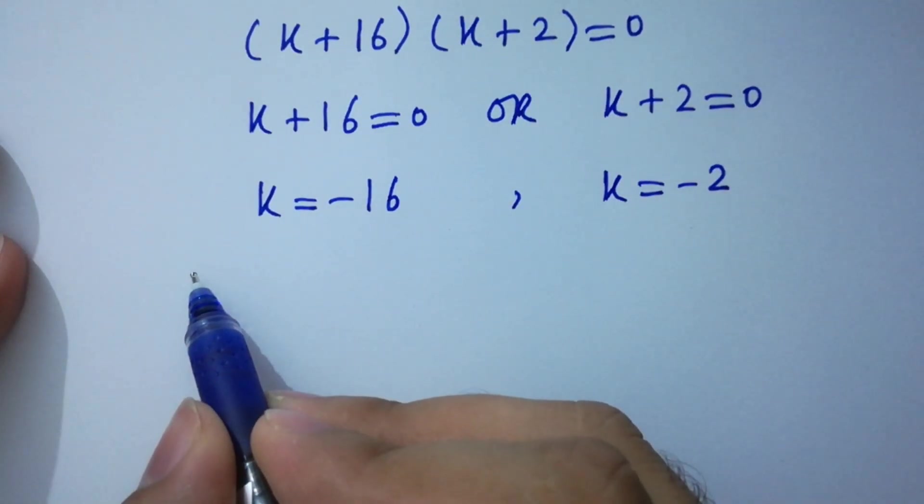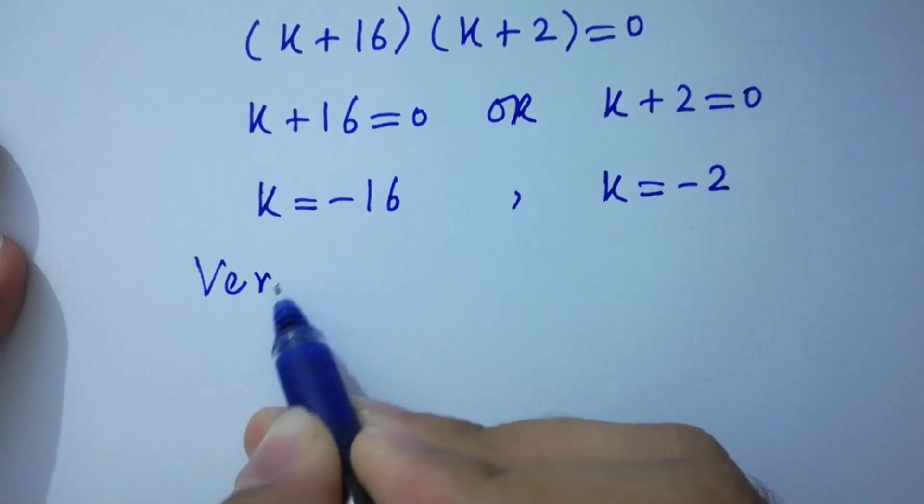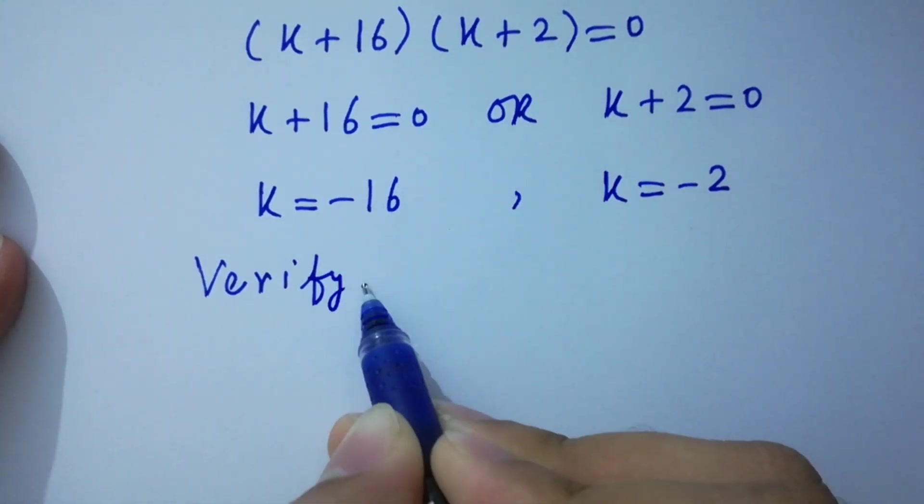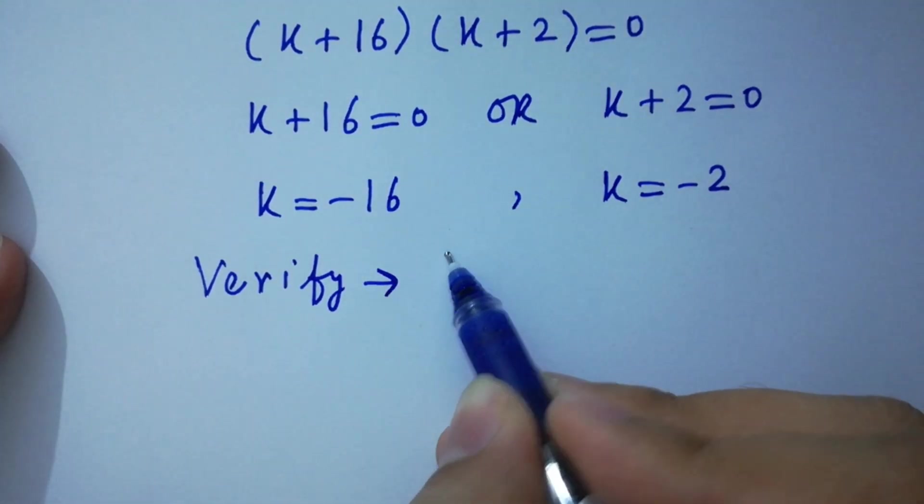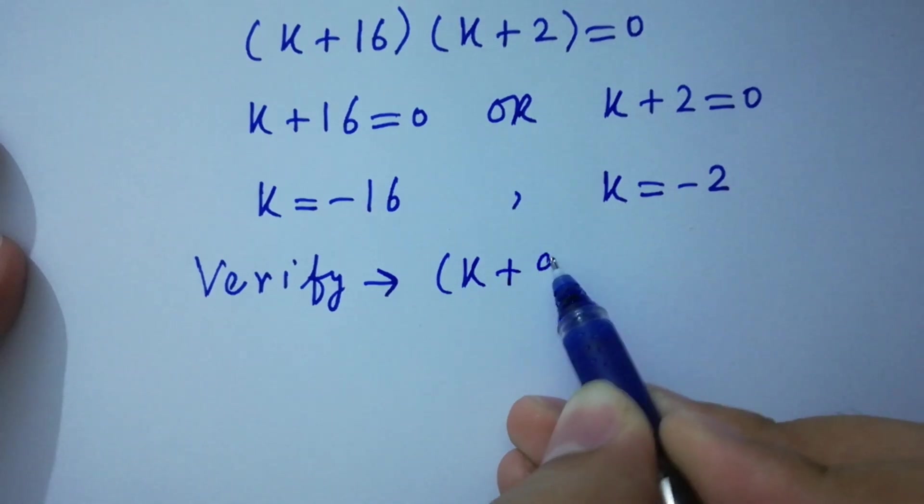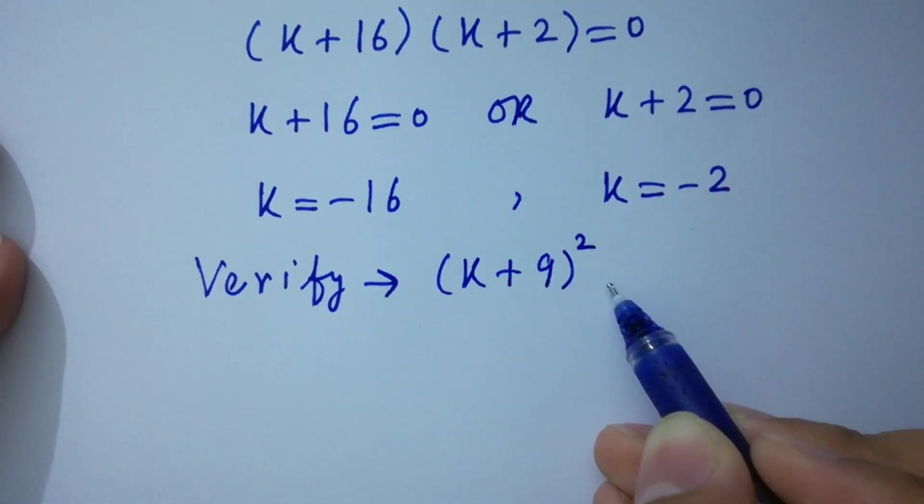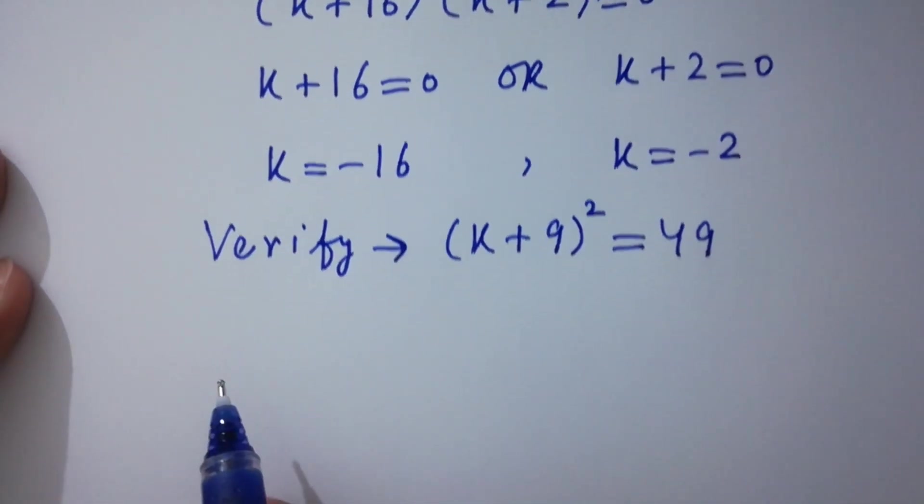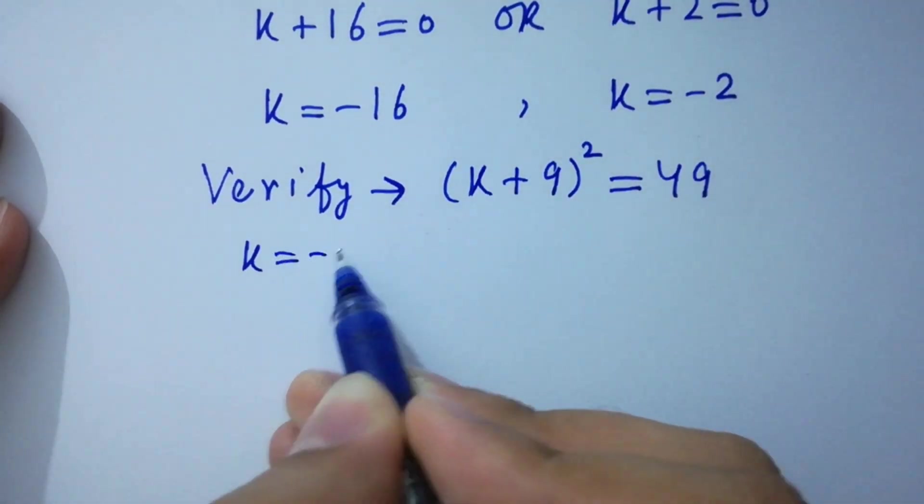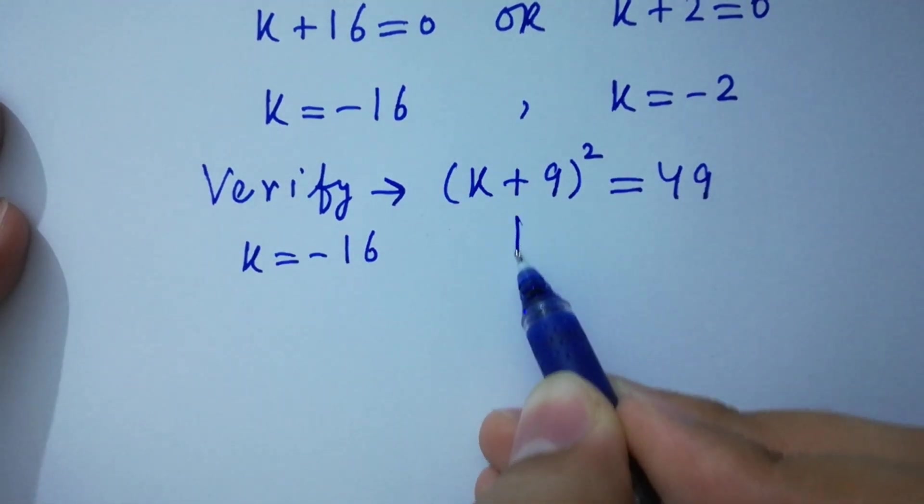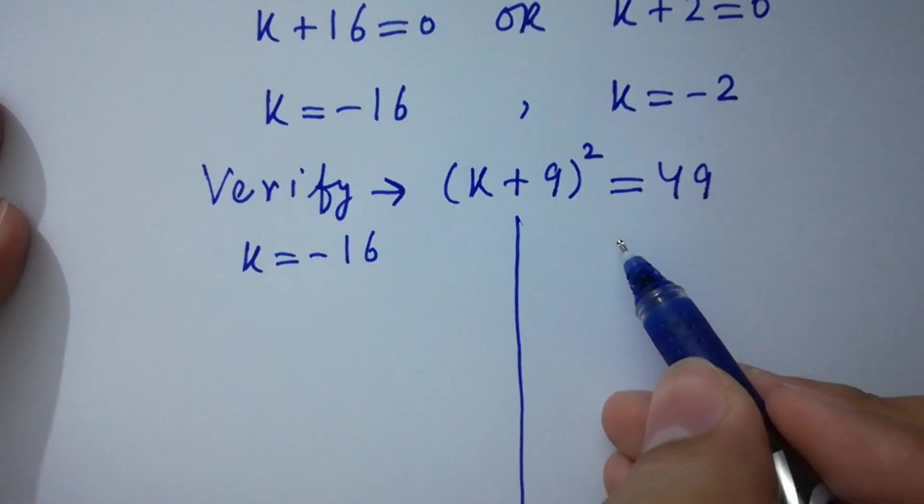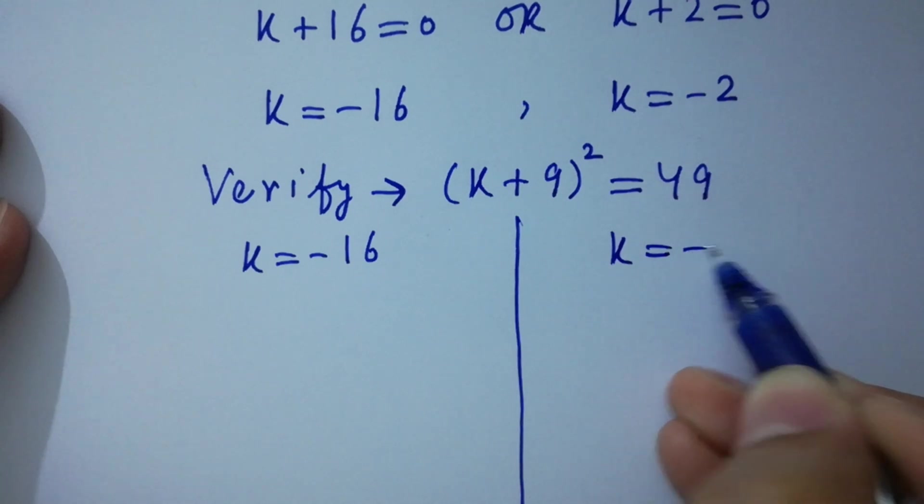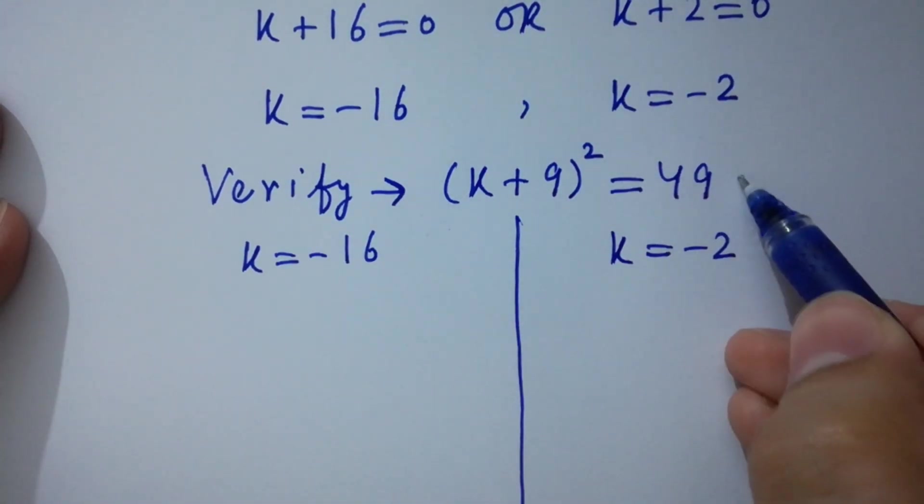In the last step, I am going to verify (k + 9)² = 49. Put the value of k = -16 and also put the value of k which is equal to -2 into this.